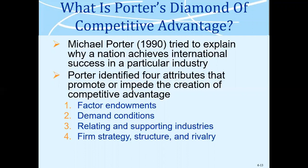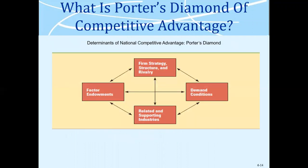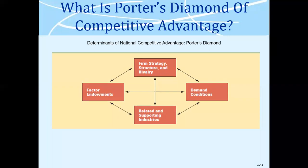The individual components in this diamond are as important as the relationships between the other components. Factor endowments means the factors of production — land, labor, capital, enterprise — you should possess them. You should be located somewhere where the factors are in abundance, especially those factors which are most involved in the production of the product or service you want to deliver.